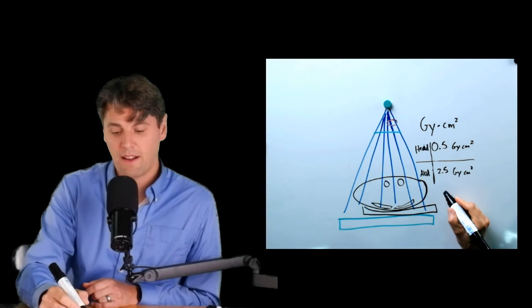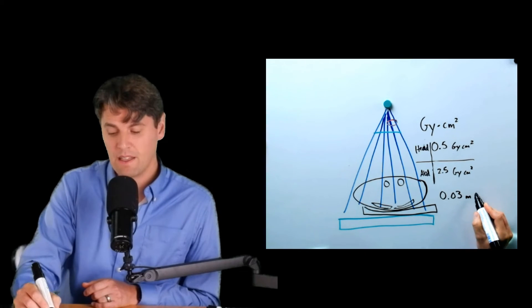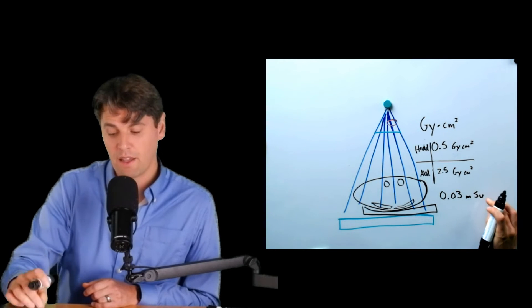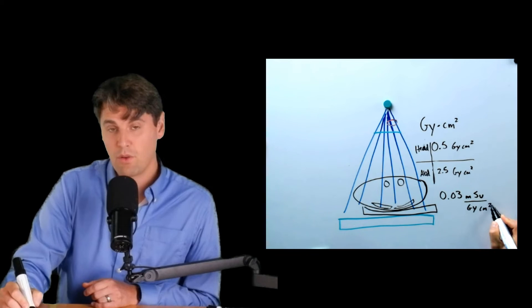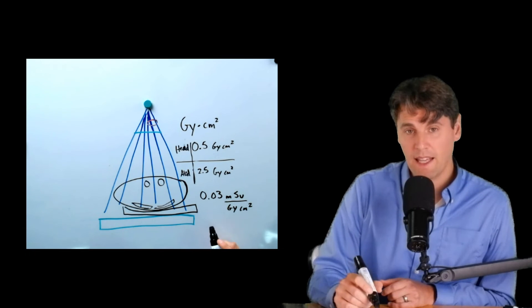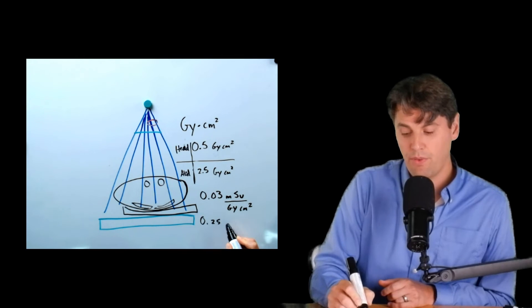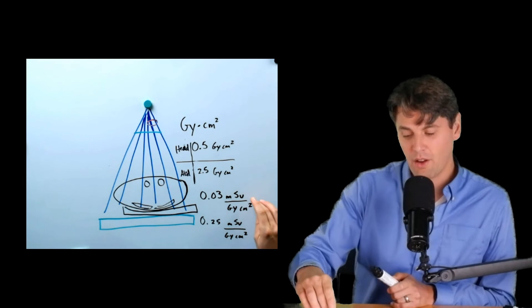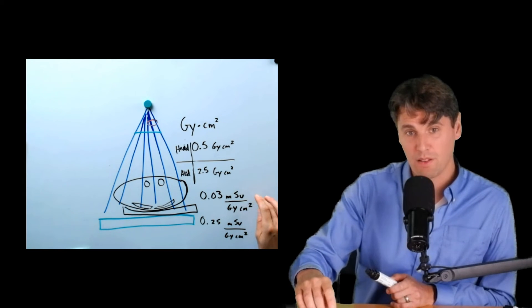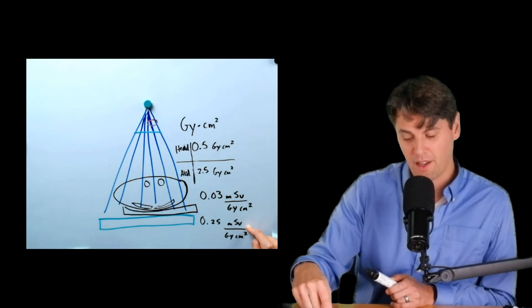But if you want just a high level approximation, you can look at approximate conversion factors. The approximate conversion factor for a head is actually 0.03 millisieverts on the top, because we want to convert to the effective dose, and then on the bottom is gray centimeter squared. If you're talking about a body exam, for instance, in the abdomen, 0.25 per gray centimeter squared is the conversion. The relativity of the brain is relatively lower. So this is one reason why this number, this conversion factor is relatively smaller than this conversion factor in the abdomen.